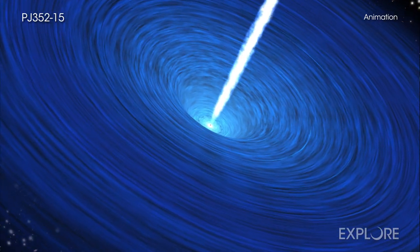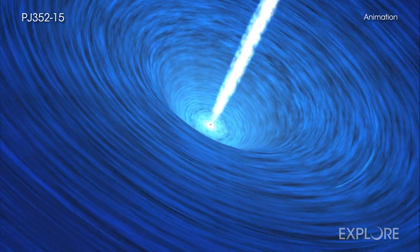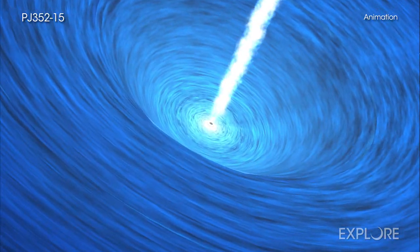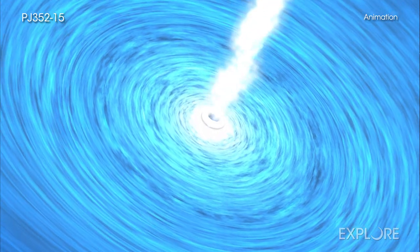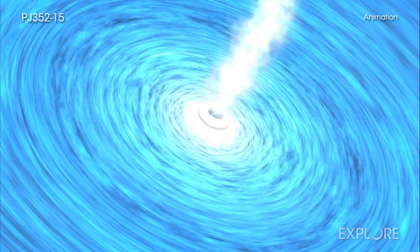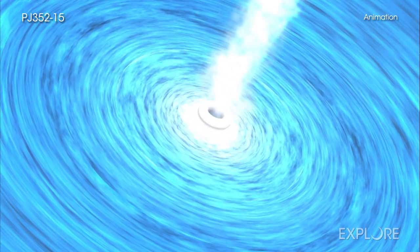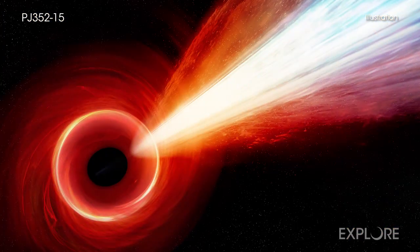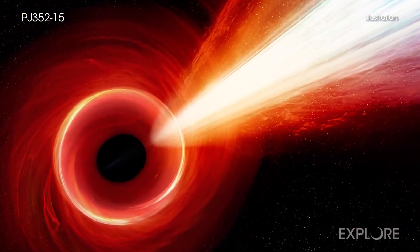The jet that the Chandra data uncovered in X-rays may be just what this black hole needed in order to grow so quickly. A jet of particles could help the black hole grow by decreasing the speed and energy of surrounding material, allowing it to fall inwards and cross the event horizon more rapidly.